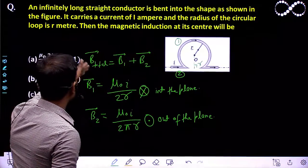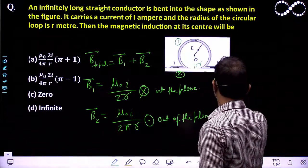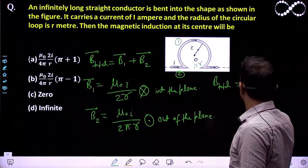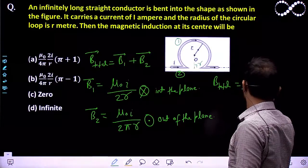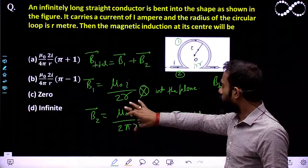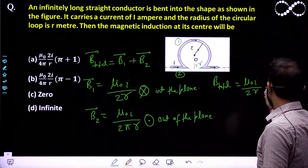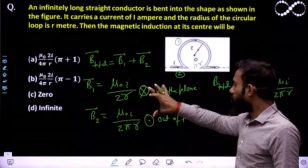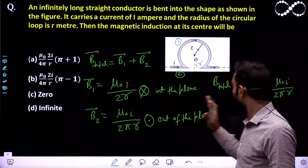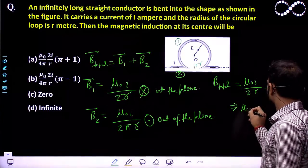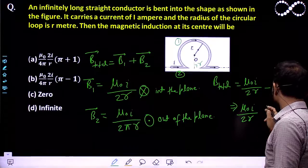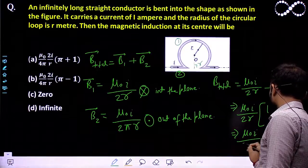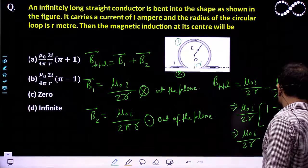Now I need to add these two vectors to get B_total. Since these two vectors are in opposite directions, B_total = μ₀I/2R minus μ₀I/2πR. Taking μ₀I/2R as common, that becomes μ₀I/2R × (1 − 1/π), which simplifies to μ₀I(π − 1) upon 2πR.